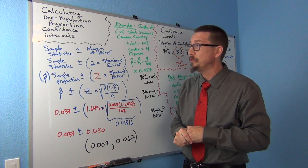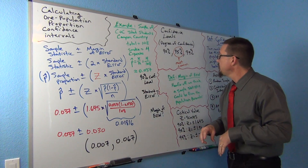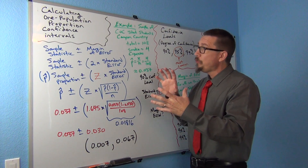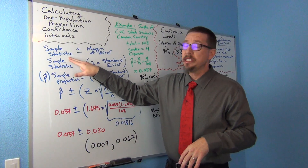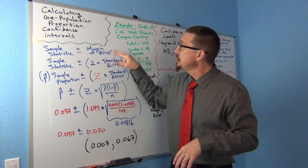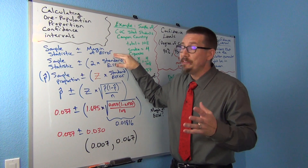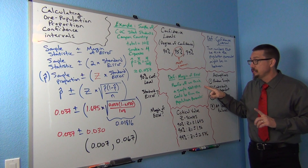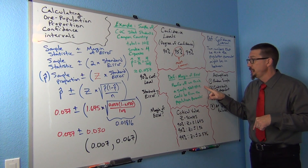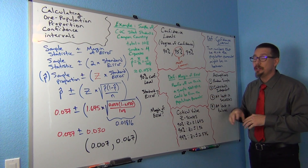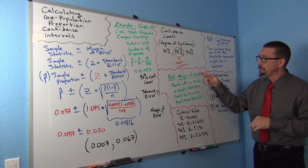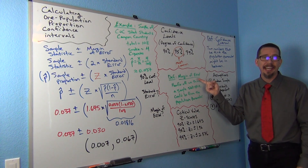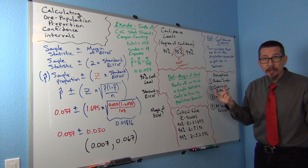So, one population proportion confidence intervals. We found out last time that the formula we often use is the sample statistic plus or minus the margin of error. The margin of error is how far off we think the sample statistic could be from the population parameter. But the question we didn't really address last time was how do you calculate that — well, it really depends on the situation.